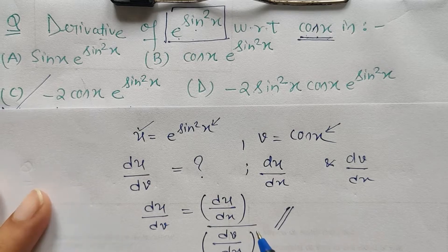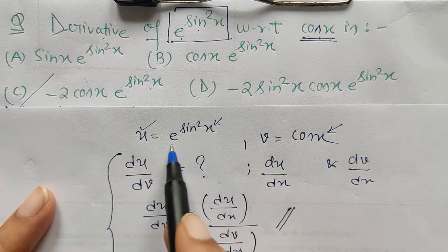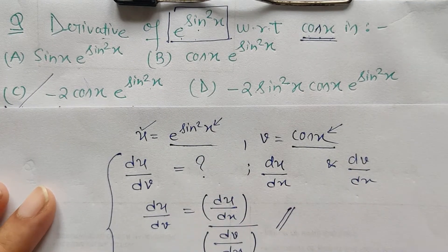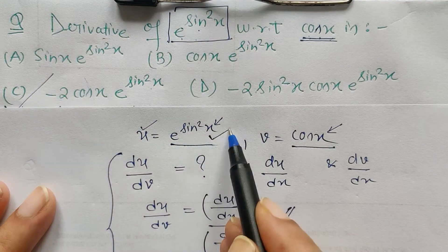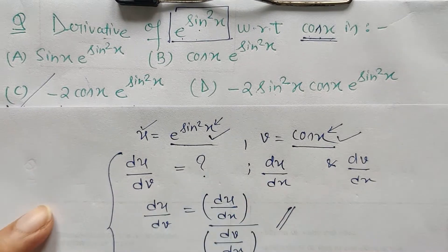Ultimately we will get this. So what we have to do is first to differentiate this with respect to x, and then this with respect to x, and then divide them. That's it.